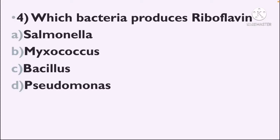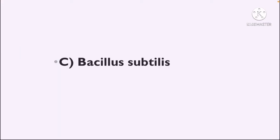Next question: Which bacteria produces riboflavin? Option A: Salmonella, Option B: Myxococcus, Option C: Bacillus, Option D: Pseudomonas. The correct answer is Option C, Bacillus subtilis.